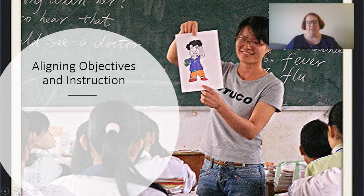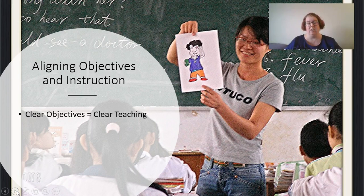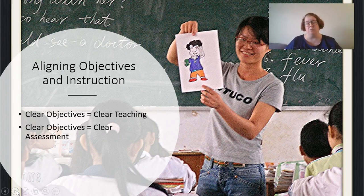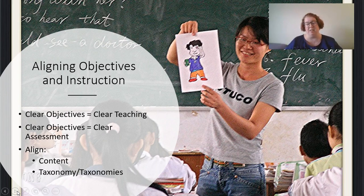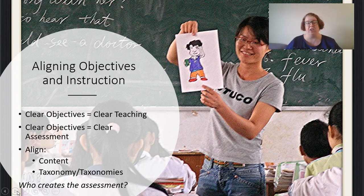Once we have our objectives and we've thought about the taxonomy — and teachers are usually most concerned with the cognitive domain — we want to think about how we align our objectives and our instruction. Clear objectives lead to clear instruction, and clear objectives also lead to clear assessment. If we can align what we want to teach, what we're teaching, and how we're assessing, then it all works nicely together. When someone else is creating the assessment — the district or the state — we need to make sure our objectives are aligned to what the eventual assessment will be, which creates another level of complexity.